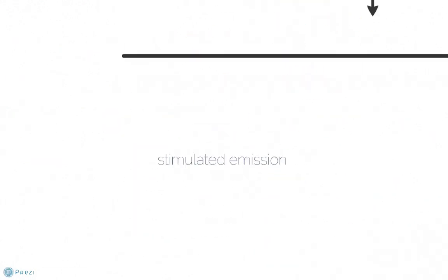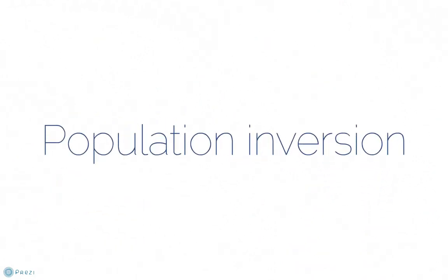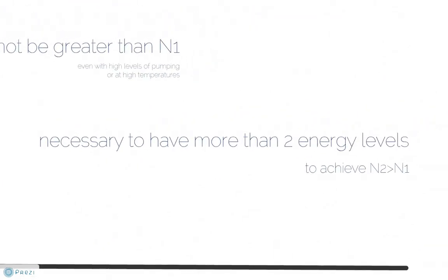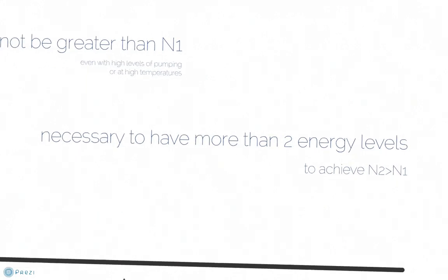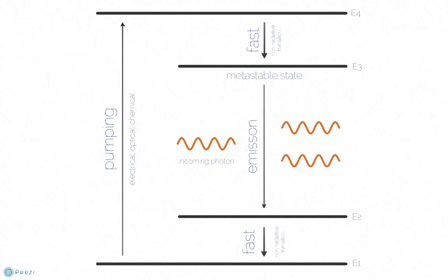To summarise, for lasing we need stimulated emission to occur. For this to happen, we need population inversion. This is not possible for a two energy level system, leading us to look at a three energy level system. We then found that this is inefficient due to a high N1 value that lowers the amplification. We then found that the most efficient system for lasing requires four energy levels, due to the value of N2 being depleted through a fast transition to N1, thus creating a larger ratio of N3 to N2 for amplification.